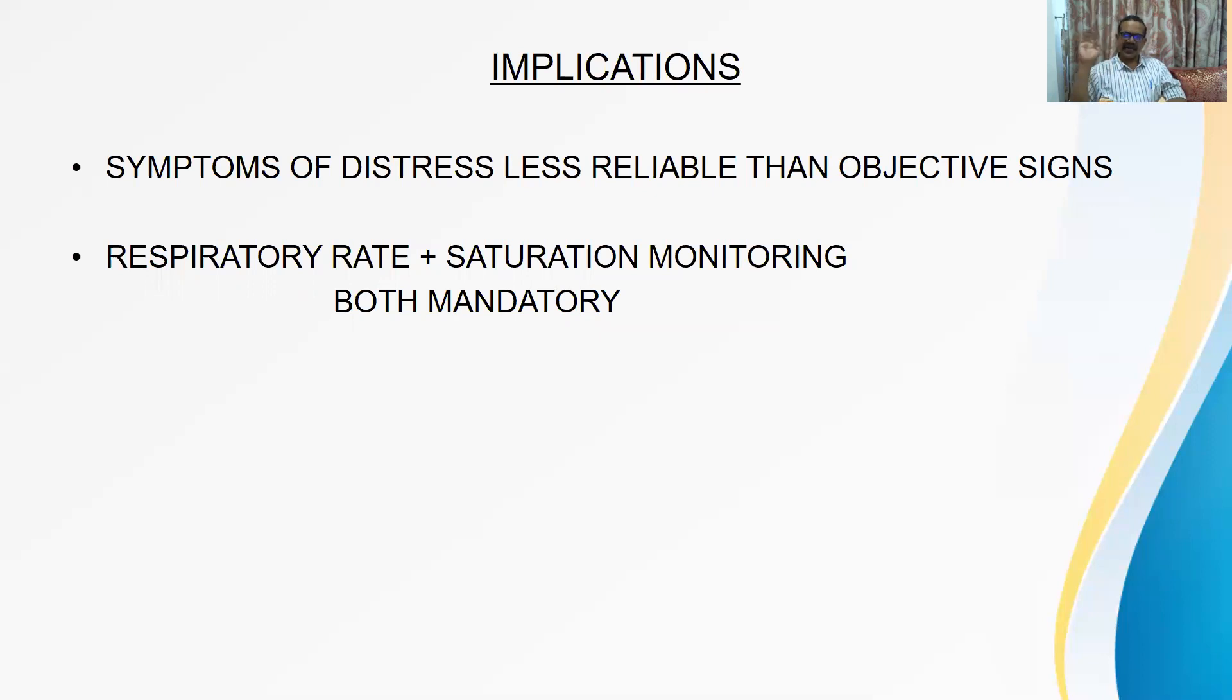So one group of patients will have distress. One group of patients won't have distress. Those who are having hypoxia won't have distress. Those who are having distress won't have hypoxia. Because one is having C-type, one is having P-type. So symptoms of distress are less reliable than objective signs. So WHO has come out with objective signs to be given more importance than symptoms. Now what are the objective signs?